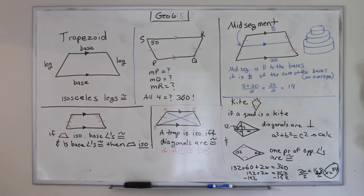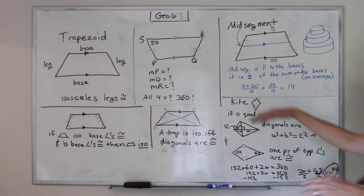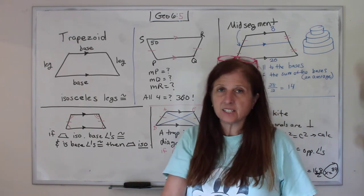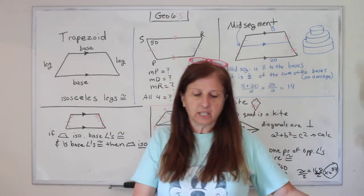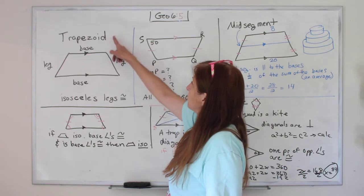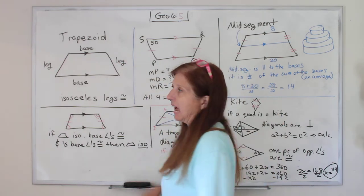Welcome back to Geometry, Chapter 6, Section 5. This time we're going to be talking about trapezoids and kites.